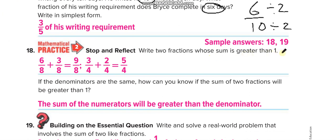Write two fractions whose sum is greater than 1. When the numerator is greater than the denominator, that fraction is greater than 1. For example, 9 over 8 converts to a mixed number: 1 whole and 1 over 8. So it is more than 1. Similarly, 5 over 4 is 1 whole and 1 over 4. When you add these two fractions you get more than 1 — that is an improper fraction.